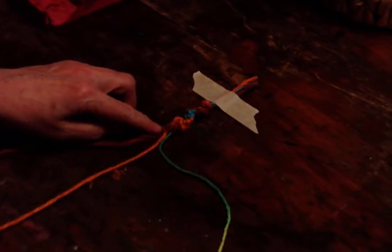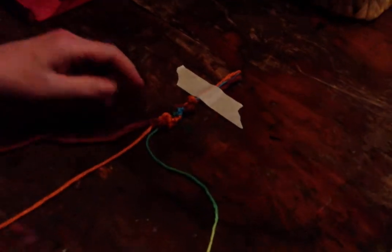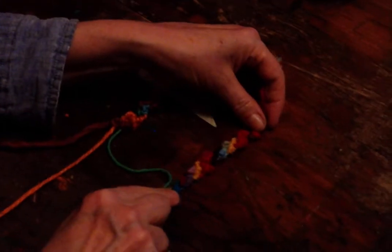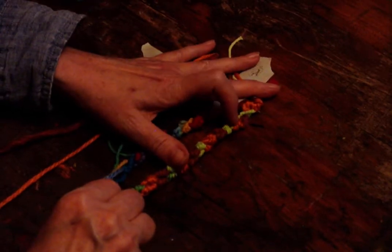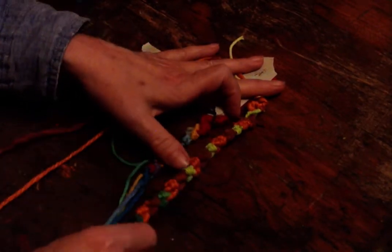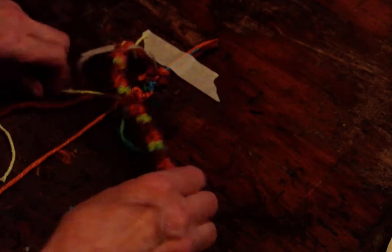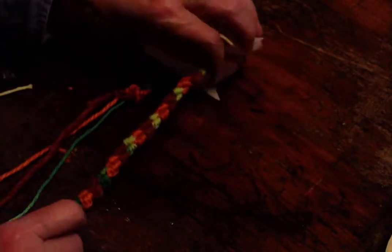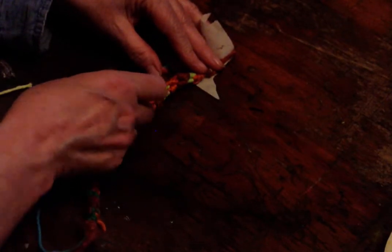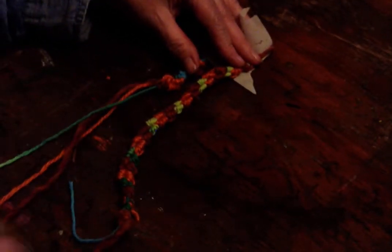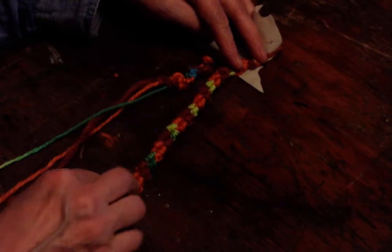So here you can start to see the pattern emerging. Here's one, and here's one where I have brown-orange-green, brown-orange-green, same three colors. So this is what this will look like when it's done, it's just that this green is a variegated green yarn. It goes from light to dark. So there you have the finished version.